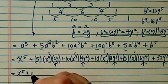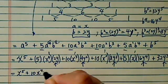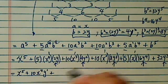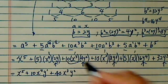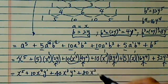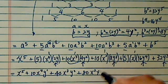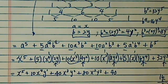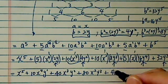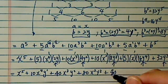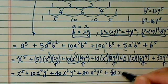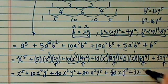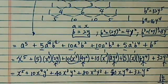x to the 5th, plus 10 x to the 4th y, plus 40 x cubed y squared — that's 4 times 10. Then 80 x squared y cubed. And 16 times 5 — let me make sure — 16 times 5 is 80. Almost made a mistake there. So it's 80x y to the 4th, plus 32 y to the 5th. That's the final answer.